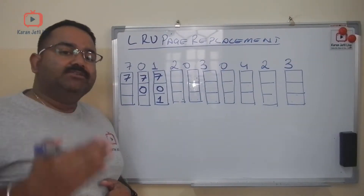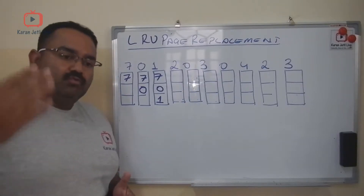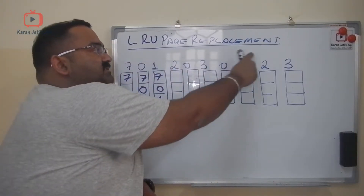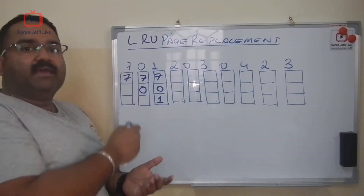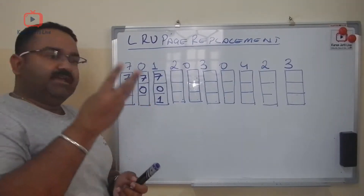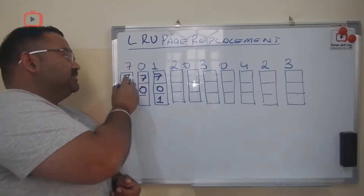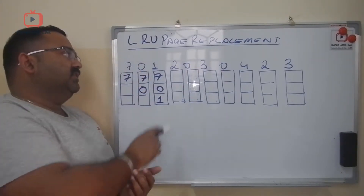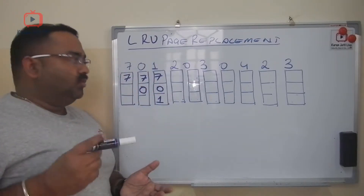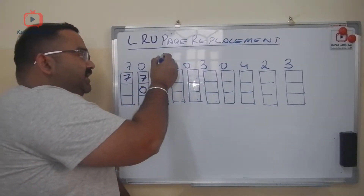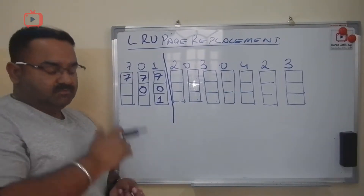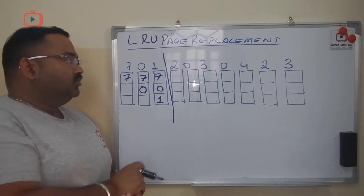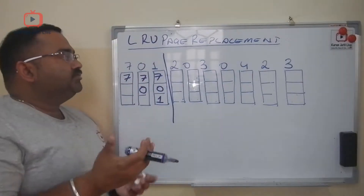So this is my page reference string and this is my cache. There are three spaces in the cache. First I need page 7 — first place is empty, I put it here. Then I need page 0, I put it here. Then I need page 1, I put it here. Now my cache becomes full.